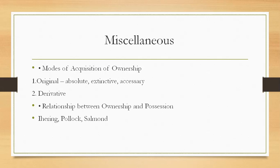Then there is one more concept you need to know very well — the relationship between ownership and possession. We have already read that possession is nine points in law. Possession, as per Ihering, is the objective realization of ownership. It is, in fact, what ownership is in right. Possession, whether of a thing, an interest, or a right, is the de facto exercise of a claim, whereas ownership is the de jure recognition of the claim. Ownership is a guarantee of the law; possession is a guarantee of fact. Possession is the de facto counterpart of ownership — it is the external form in which rightful claims normally manifest themselves.